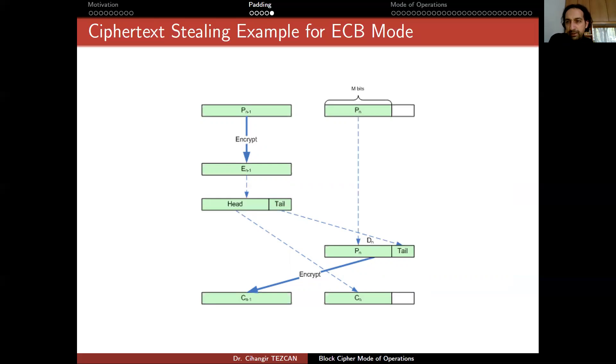So there is no padding. There is no message expansion. And the person who wants to decrypt will follow the same thing in the reverse order. So they have the secret key. They will decrypt this part, take the tail, put it here, take the last block here, put it here. And then decrypt it again to obtain this plaintext block.